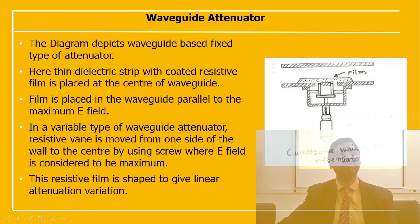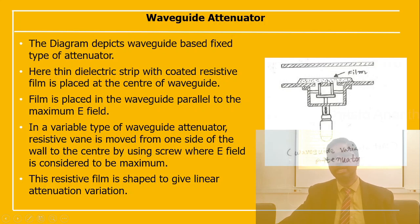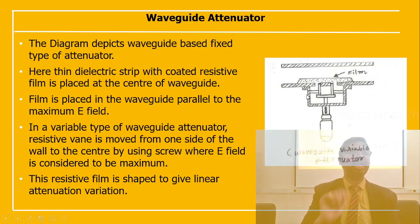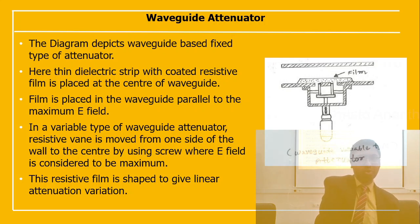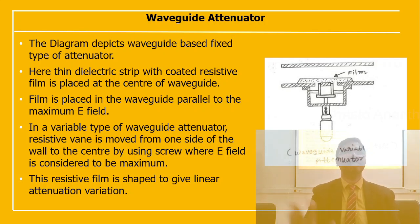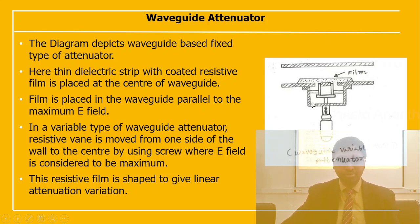In the variable type waveguide attenuator, a thin dielectric strip with a coated resistive film is placed at the center of the waveguide, parallel to the electric field. The resistive vane is moved from one side of the wall to the center using a screw, where the electric field is maximum. The resistive film is shaped to give a linear attenuation variation.